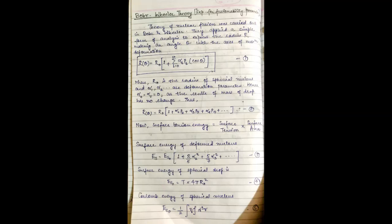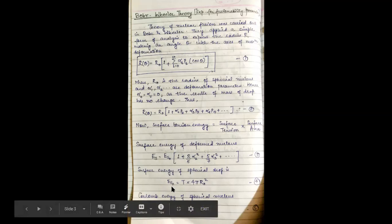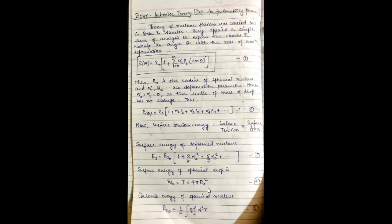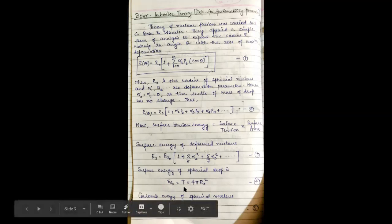We substitute these two values in equation 1. Thus we get the final equation as R theta equals R naught times 1 plus alpha 2 P2 plus alpha 3 P3 plus alpha 4 P4 and so on. The surface energy of the spherical drop is ES0 equals T times 4 pi R naught square, where 4 pi R naught square is the surface area and capital T is the surface tension.